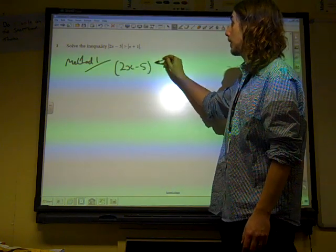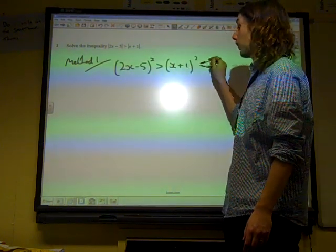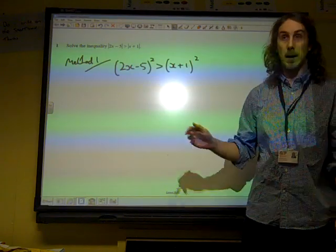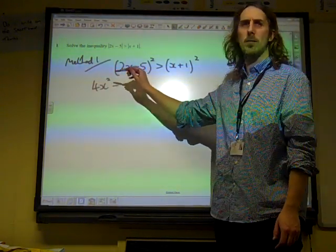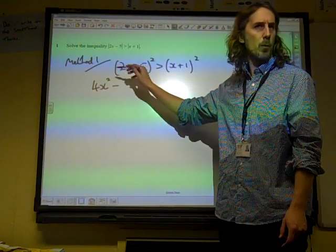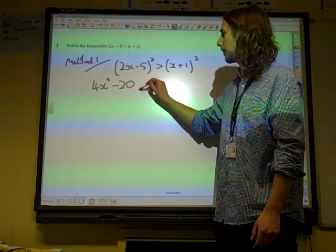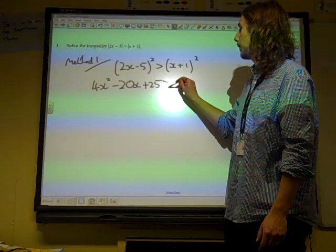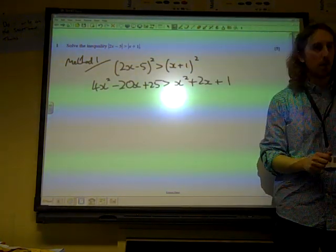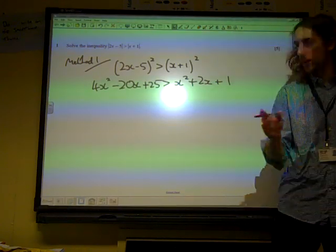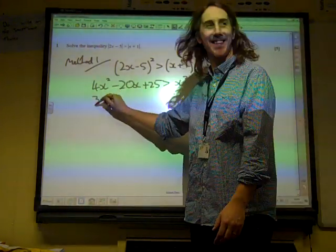So if we square both sides, we get (2x minus 5) squared is greater than (x plus 1) squared. And then we will multiply out both sides of this. This at this stage should be really easy to do, shouldn't it? So here we have 4x² minus 20x and plus 25, and here we have x² plus 2x plus 1. And then we need to combine it into one quadratic.